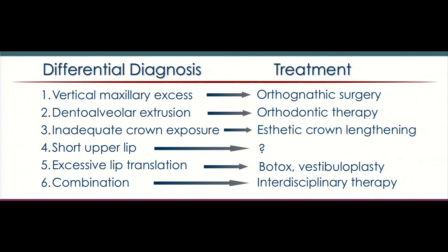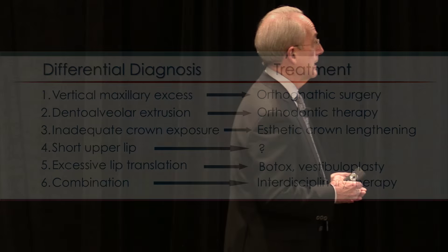In terms of differential diagnosis, there are a number of things that might lead to the expression of a gummy smile. One would be a skeletal problem called vertical maxillary excess, treated by orthognathic surgery. There may be an extrusion of the teeth — a dental alveolar extrusion — that can be treated with orthodontic therapy to intrude the teeth back to their proper position. The inadequate crown exposure is treated with aesthetic crown lengthening. Some patients have exposure of excessive gingiva because they simply have a short upper lip, and in that case there's really nothing to do.